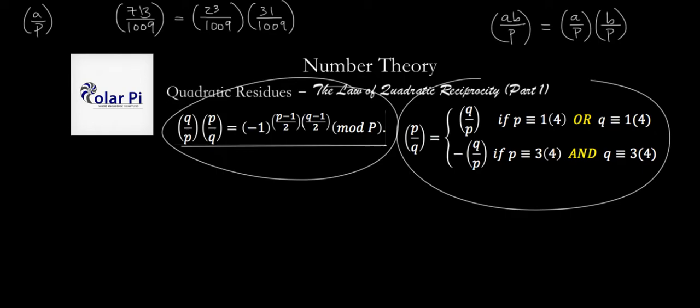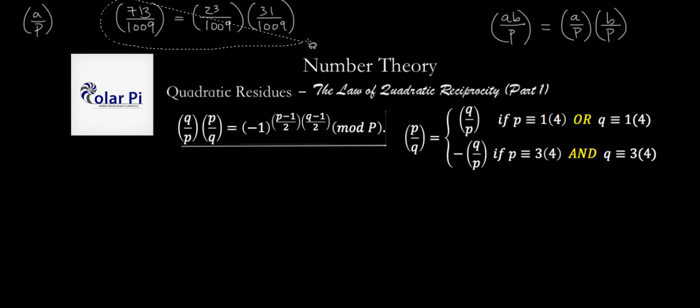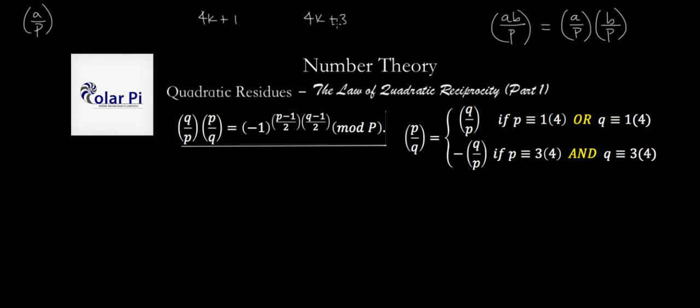But I'll save all that for the video where we actually work out all the details of this guy, which will be our first example on calculating a over p for a large a and a large p as I said. So the rest of this video then is going to be about showing how this here is equivalent to this here.